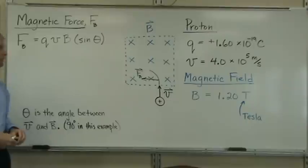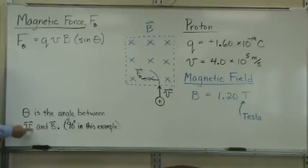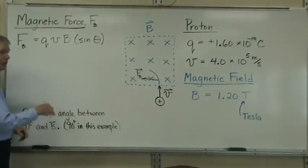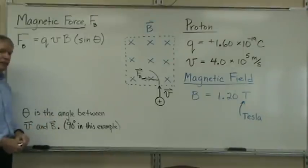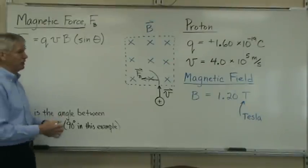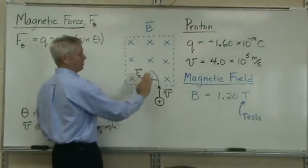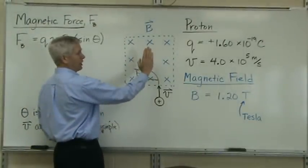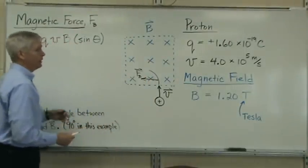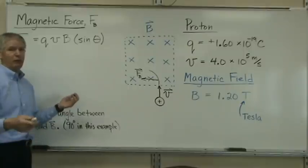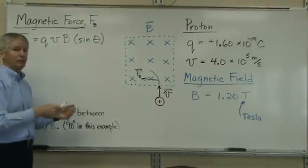It's also related to the angle theta. Theta is the angle between the velocity vector and the magnetic field vector. Now in this case, we're going to keep it simple. We're going to say that theta is at 90 degrees, which it is. Into the board, straight up, so that angle is 90. Let's go through the calculation and find out what the magnetic force would be in this example.